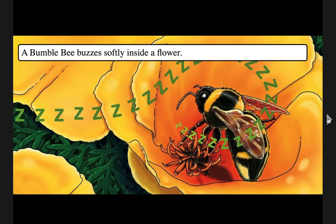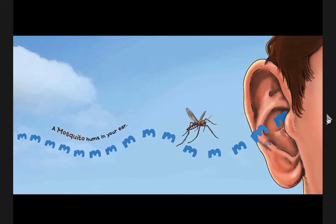A bumblebee buzzes softly inside a flower. Now you become a bumblebee. A mosquito hums in your ear. Your turn.